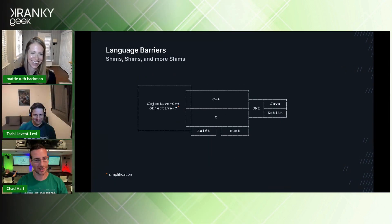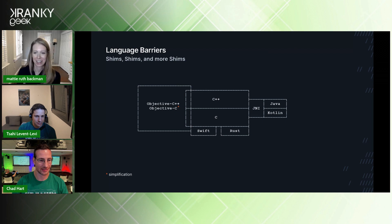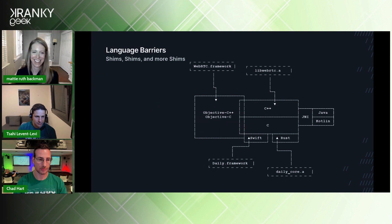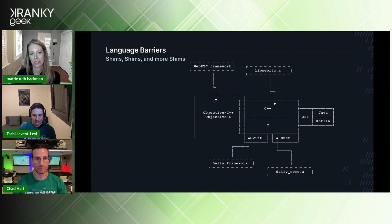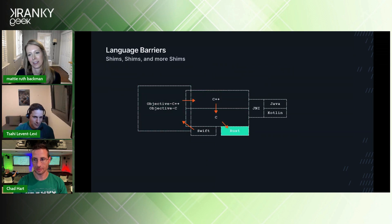Time for some code. Here is a diagram showing the languages we work with on native and how they can talk to each other. Each language can only talk to another language that it touches. So for instance, Swift can talk to C and Objective-C, but not C++ or Rust. You would think the jump from Swift to Rust would be as simple as compiling Rust bindings to C, making it a small skip. But our Swift API actually depends on both the Rust core and the WebRTC framework, and since the WebRTC framework is in Objective-C++, we have to go a roundabout way to get to Rust through Objective-C.